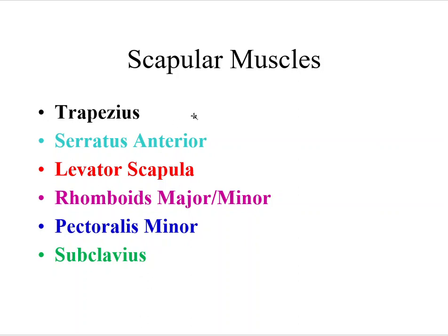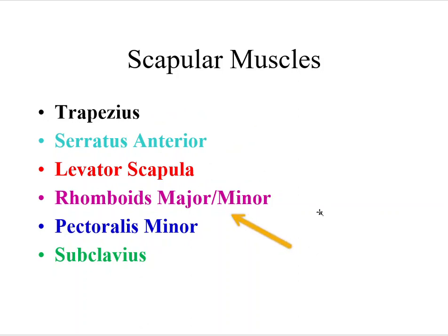So we have the trapezius, serratus anterior, levator scapula — its function is in its name — rhomboids major and minor (some people just call them the rhomboids), pectoralis minor, which really has nothing in common with the pectoralis major except it is deep to it. And then we have the subclavius, which tells you exactly where it is — it is below the clavicle.